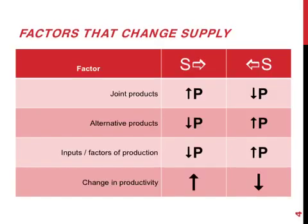The factors that can cause a change in the whole supply curve were explained in chapter 7. This table provides a quick summary of some of the main factors involved. We can start with the joint and alternative products.